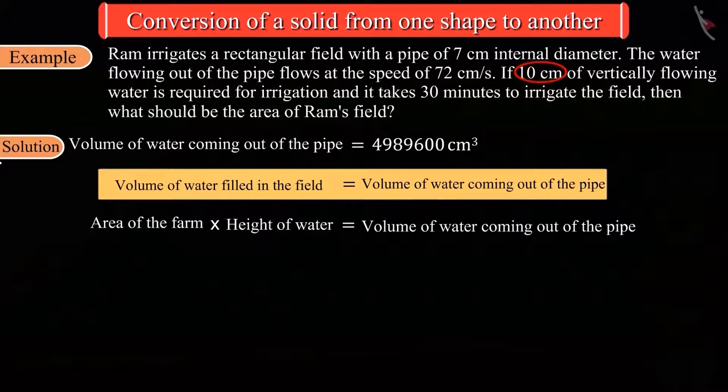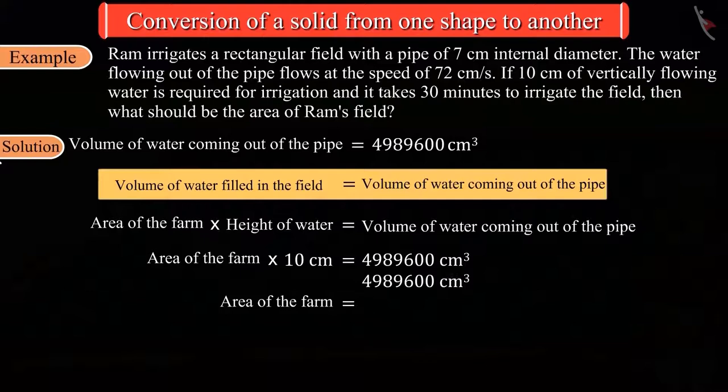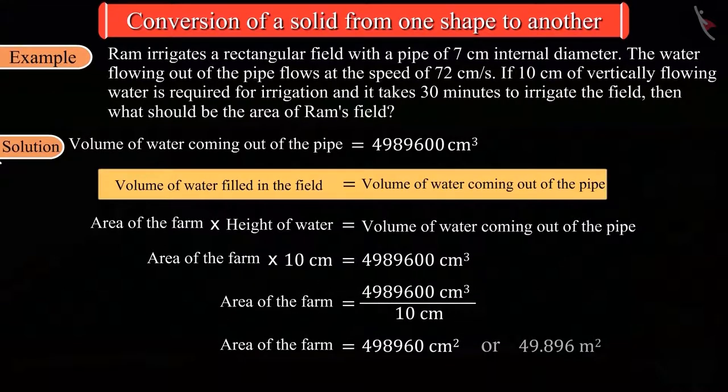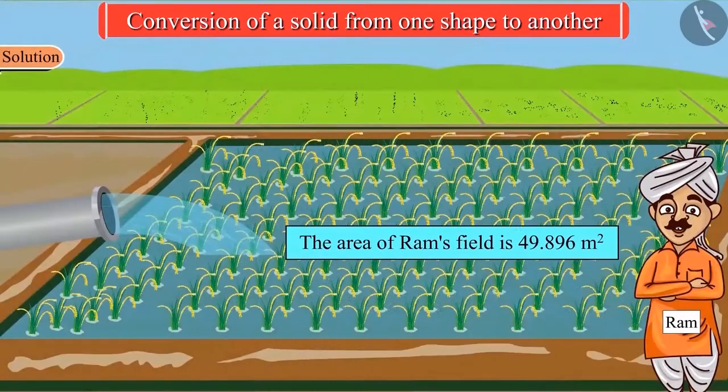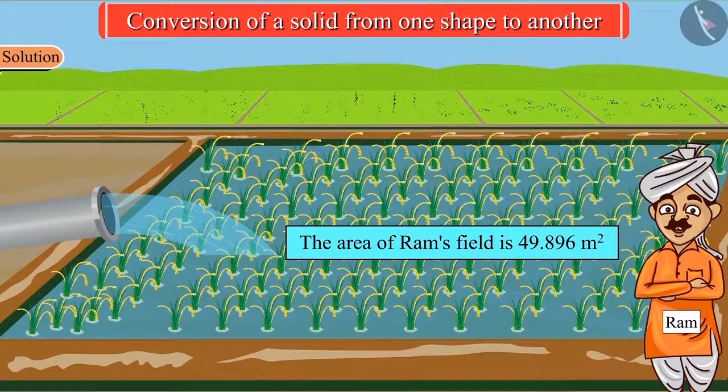We know that the height of the water is 10 centimeters as given in the question, and we have already found the volume of the water coming out of the pipe. Replacing all the values in the formula and solving further, we get the area of the field. So the area of Ram's field is 49.896 square meters.